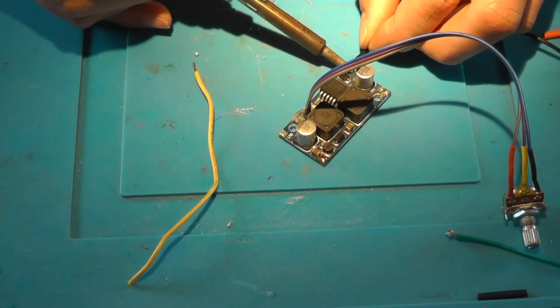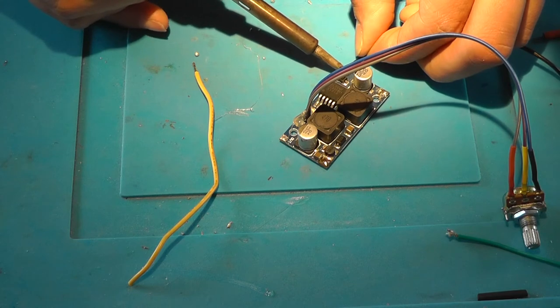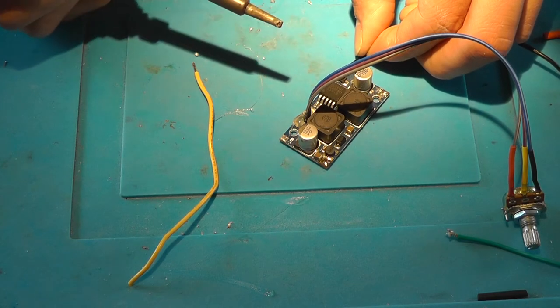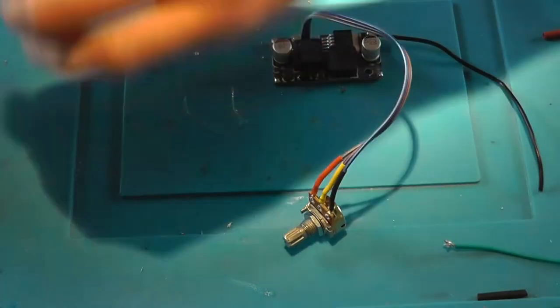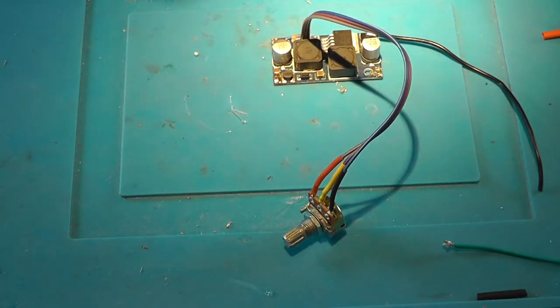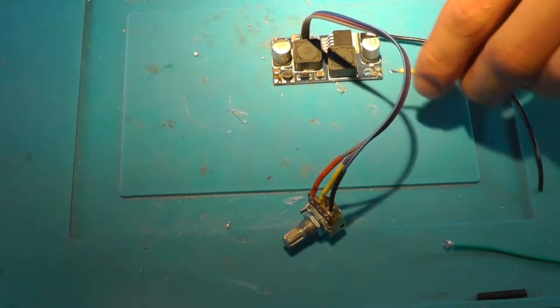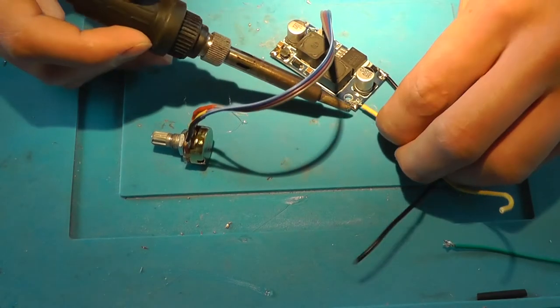When that's done, it's time to solder the input and output wires to the buck boost converter. I use a standard PC power supply cable for this. You need two pairs - one for the incoming power and one for the outgoing power.